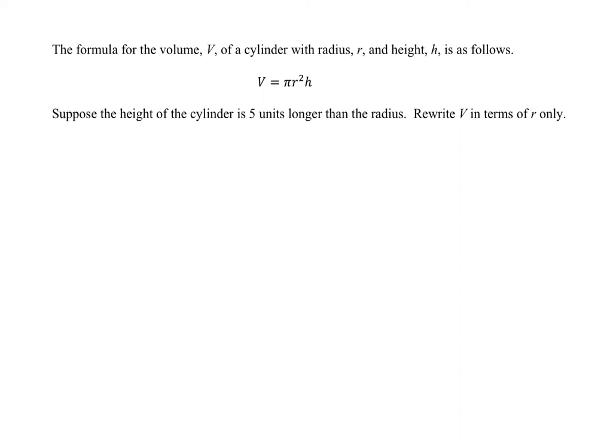The formula for the volume V of a cylinder with radius r and height h is as follows: V equals π r squared times h.